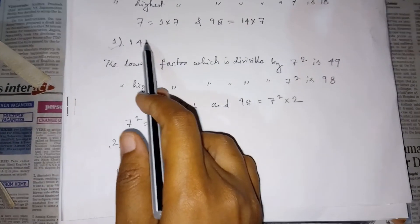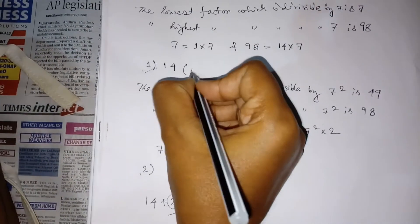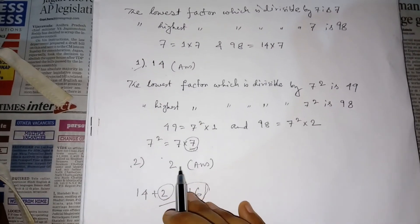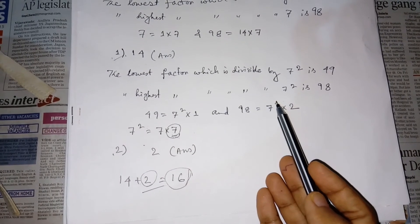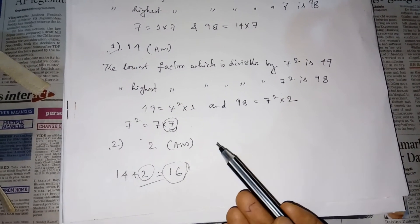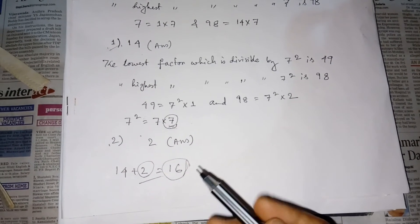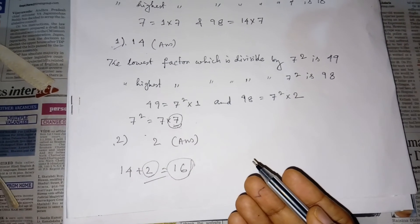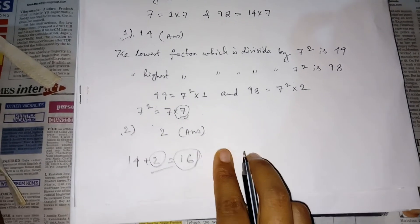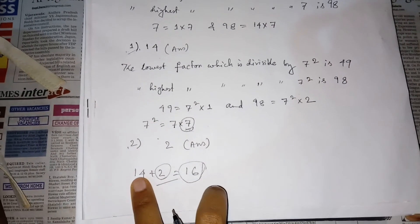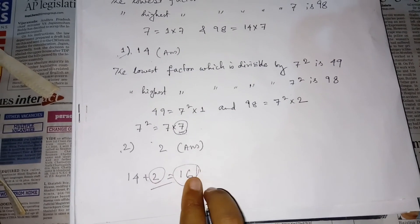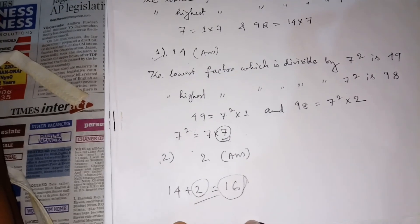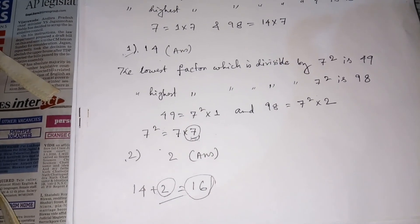The answer for the first point is 14. Out of them, two numbers are divisible by 7 square. So it is clear that there are two factors which contain an extra 7. Except the 14, there are two extra sevens, so the total number of sevens present in this expression is 14 plus 2, which equals 16.